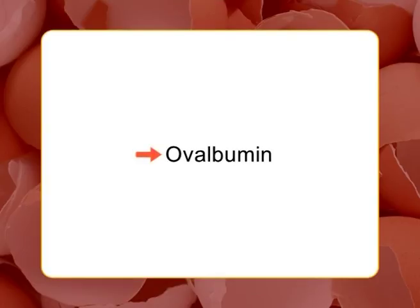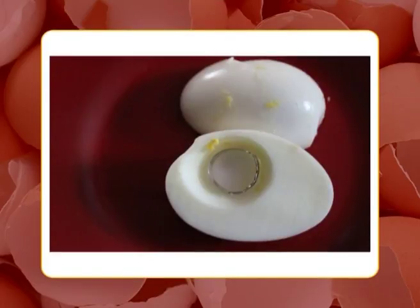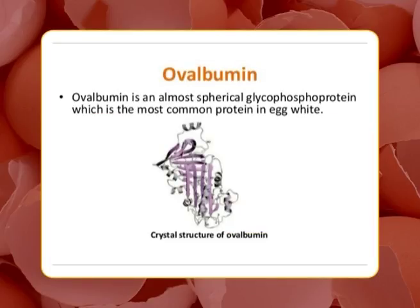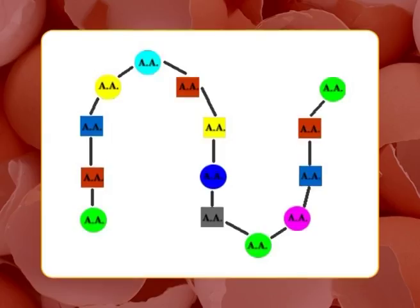Each protein has a different structure and generally a specific function. The first is ovalbumin, the main albumin protein. It is a glycophosphoprotein with 3.2 percent carbohydrates and 0 to 2 moles of serine-bound phosphoric acid per mole of protein. Ovalbumin consists of a peptide chain with about 385 amino acid residues and is relatively readily denatured, for example by shaking or whipping its aqueous solution.